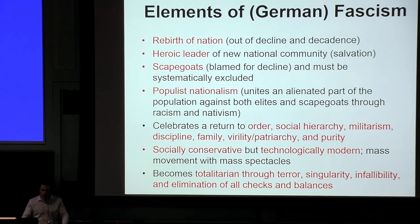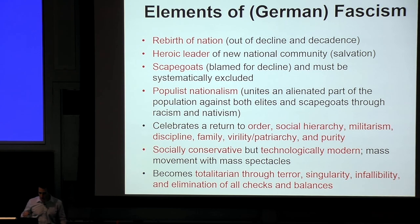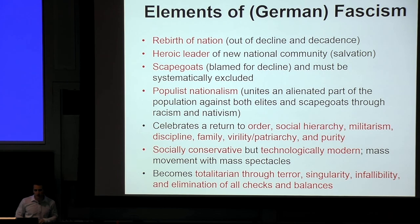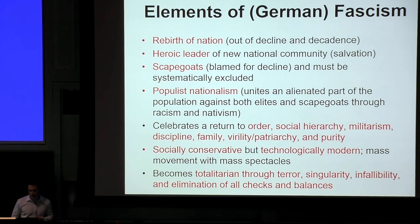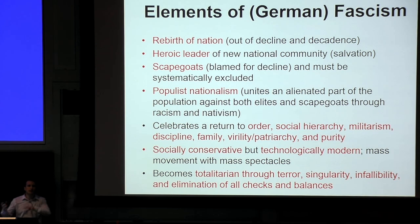The elements of fascism distilled from German fascism: first, the rebirth of a nation out of some kind of decline or decadence — a sense of being able to reinvent and make it great. A heroic leader who can form a new national community and save that community. Scapegoats — blamed for decline and excluded. In 1920s Germany it was systematically the Jews. It's populist, and often appeals to racism and nativism — a sense of belonging, 'it's our country, we need to take it back, someone is taking it from us.'